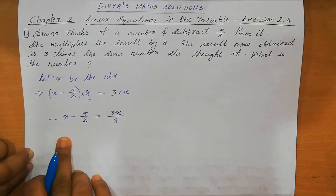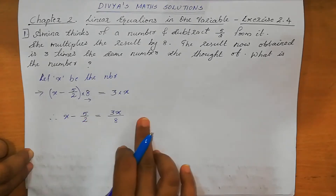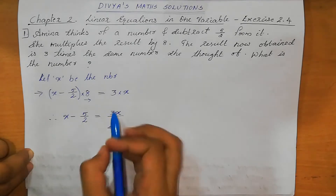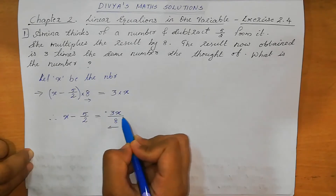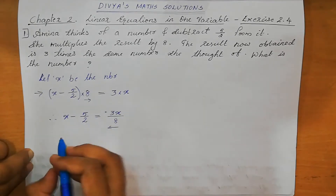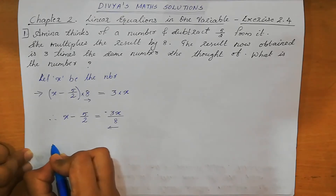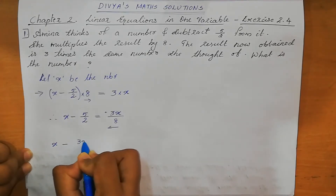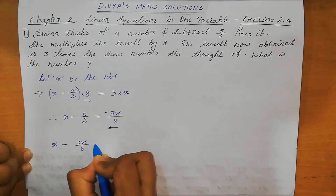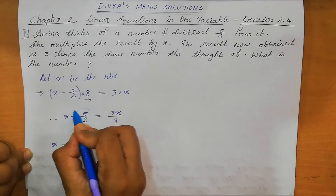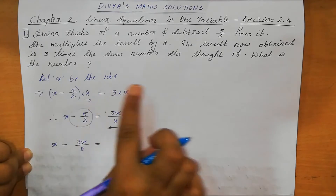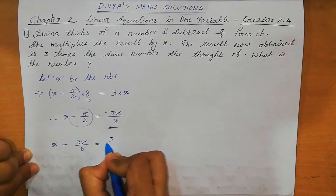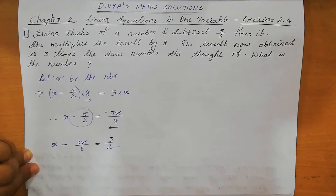This X value we can move to the left-hand side and numbers to the right-hand side. This 3X by 8 we are moving — its sign is plus by default, so moving makes it minus. Left-hand side: X minus 3X by 8 equal to. Then we are shifting minus 5 by 2, which becomes plus 5 by 2. Equal to 5 by 2.